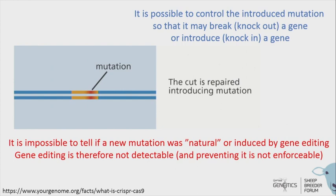That means it is really unenforceable. If you put up a speed limit sign, that's enforceable because there are radars to tell how fast you're going. But if I show you some DNA and say this is a really good ram or bull, you can't tell whether that naturally occurred in my flock or herd, or whether it was done by gene editing.